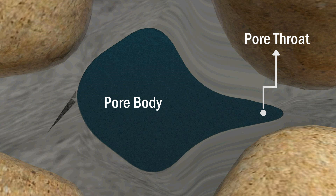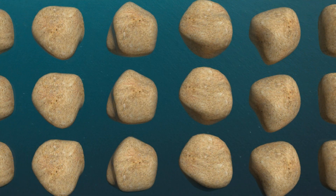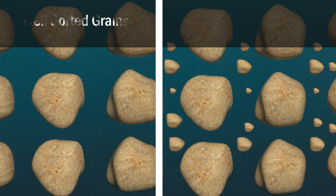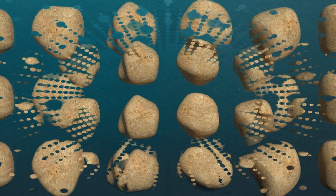Porosity is affected by many geological factors. Number one: degree of sorting. Well-sorted round grains have a high porosity of 30 to 40 percent. However, in poorly sorted grains, smaller grains fit between larger grains, causing a dramatic decrease in porosity.